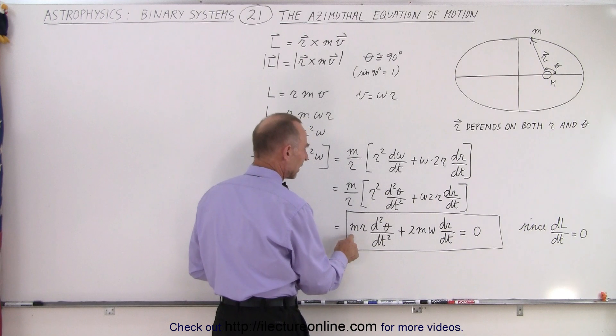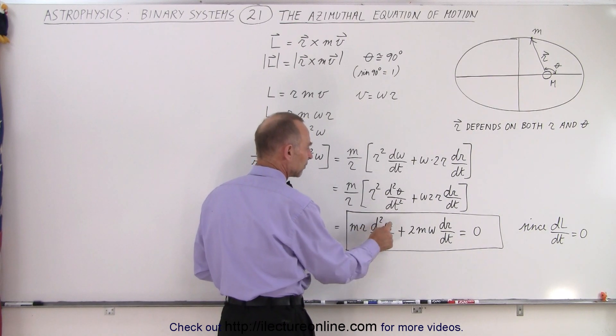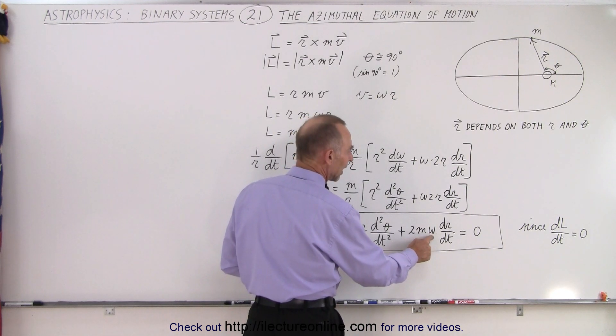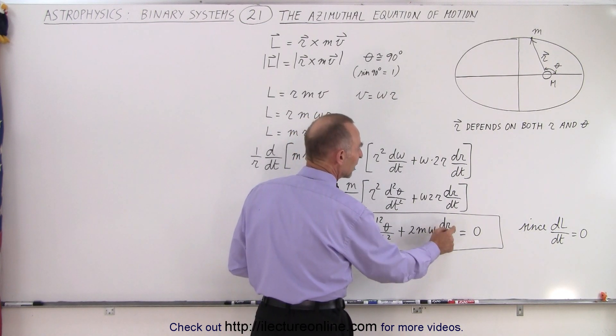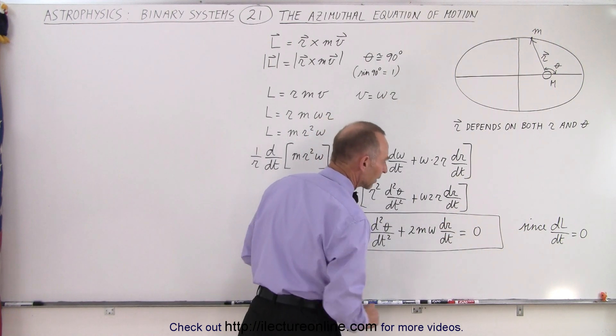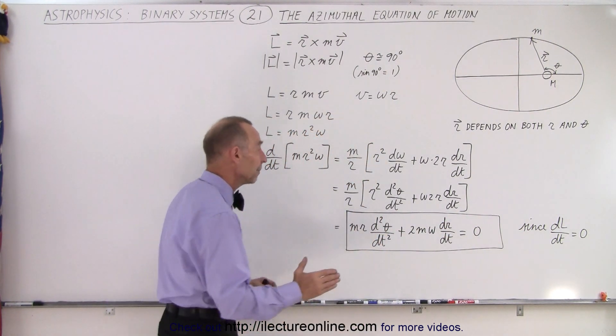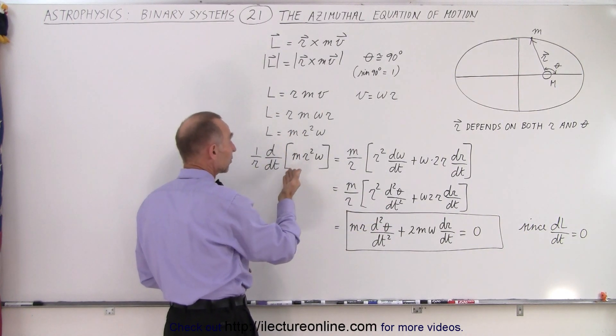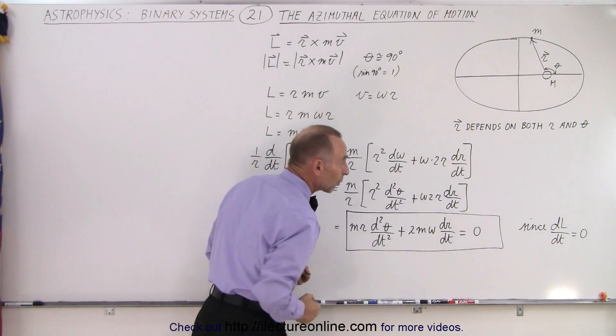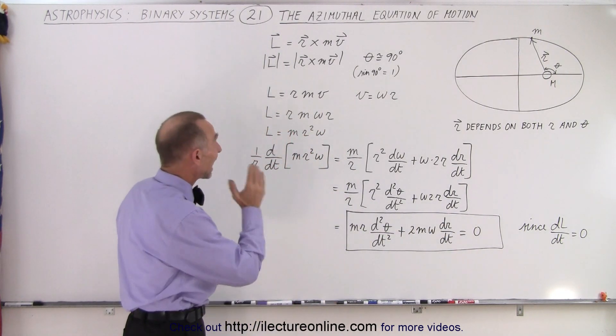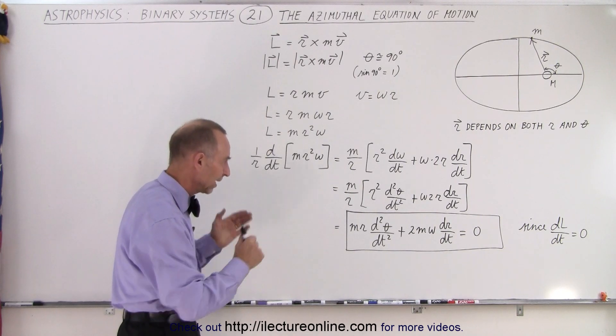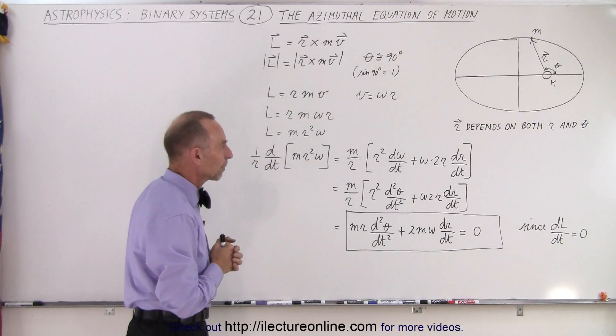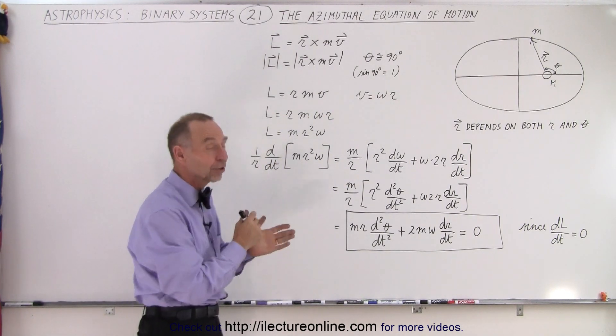And then when we multiply this back in, we get mR times the second derivative of the angle with respect to time, plus two times the mass times the angular velocity times the first derivative of the distance to the planet with respect to time. We know that must equal zero because the angular momentum is constant, so the derivative of the angular momentum is zero. We end up with this equation right here which is known as the azimuthal equation of motion. So that's our second equation that we derive for the motion of a planet around the Sun, again another differential equation.